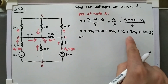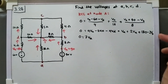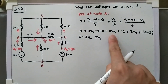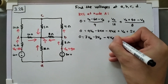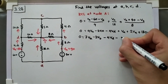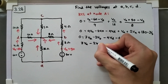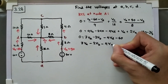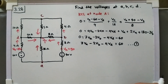Collecting terms: for VA we have 4 plus 1 plus 2 giving 7VA, for VB we have minus 2VB, and for VD we have minus 4VD. For the constants: minus 240 plus 180 equals minus 60. Rearranging gives equation number 1: 7VA minus 2VB minus 4VD equals 60.